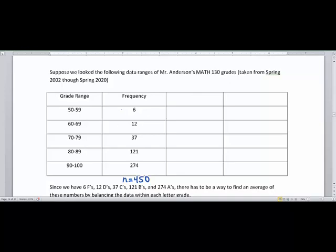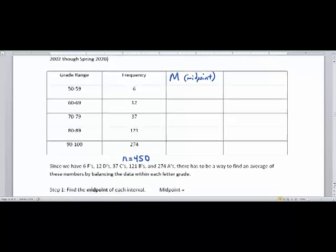Since I don't have the exact data points between 50 to 59, I don't know if all six of them are 50s or all of them are 59s or where they actually are, we're going to find the M, which is the symbol for the midpoint of this data range. So what we do is we take our low 50 and our high number 59 and we are going to divide that by two.